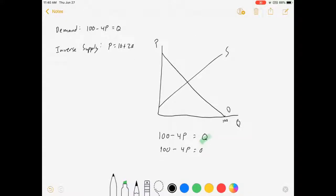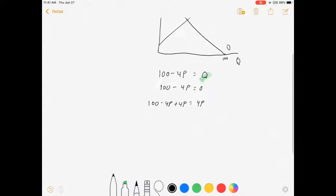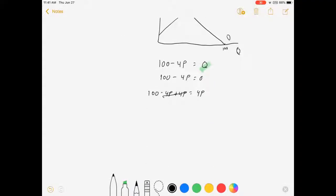So, I'm going to add 4P to both sides. And I'm going to watch as those beauties cancel out. 100 equals 4P, divide both sides by 4, P equals 25.